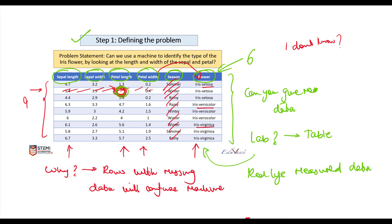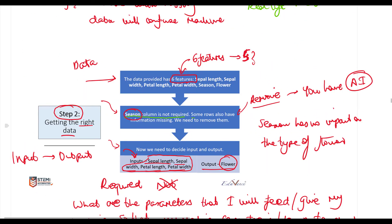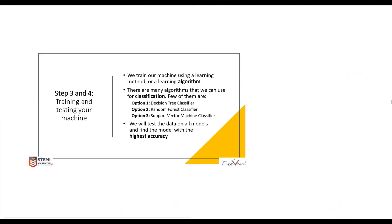There are two parts to this data cleanup: first, remove data that is not related — that is the season column; second, remove rows where data is missing. Please remember: rows with missing information need to be removed. That completes step number two.